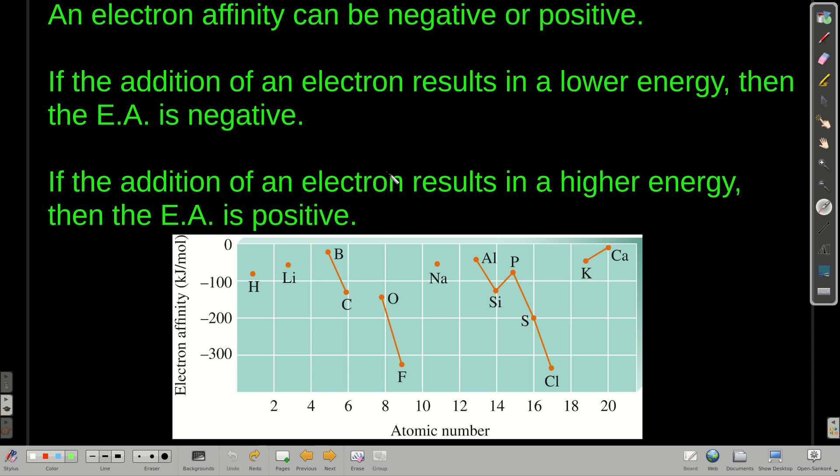On the other hand, if it results in a higher energy, which is certainly possible, then the electron affinity for that species is positive. These are the electron affinities graphed for some of the first elements in the periodic table. Hydrogen, notice helium's not here because helium has a positive electron affinity. You have to force it to take that electron if you can. Lithium back down here. Beryllium again, positive electron affinity. Boron, carbon. Notice nitrogen also has a positive electron affinity, and so forth.